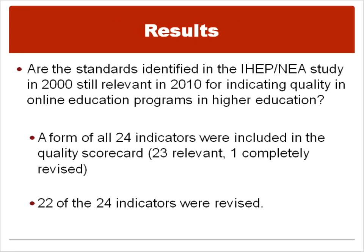I'd like to present the results by each of the actual research questions. The first question was whether the standards identified in the original 2000 study were still relevant today. Out of those original 24 standards, the panel said that 23 were still relevant and one was not relevant but was completely revised to be made relevant. Twenty-two of the 24 were actually revised in some form, and two of the original 24 were not revised. The panel combined two of them into one, taking us down to 23, and then split two other indicators into two additional ones, taking us up to 25.